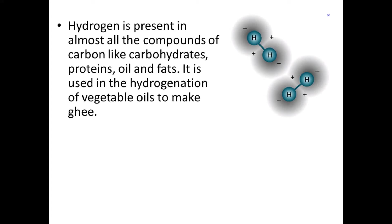Hydrogen is present in almost all the compounds of carbon, like carbohydrates, proteins, oils, and fats. Hydrogen is used in the hydrogenation of vegetable oil to make ghee. Hydrogen is added to the oil to form ghee. This process is known as hydrogenation of oil, or we can say reduction — addition of hydrogen is known as reduction reaction. So hydrogen is also a very important element.